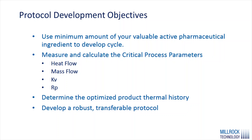A couple of objectives when developing a new freeze drying cycle or optimizing an existing one is that we want to do this using a minimum amount of valuable active pharmaceutical ingredient or protein product. Throughout this cycle, we need to measure and calculate our critical process parameters, such as heat and mass flow, our Kv, vial heat transfer coefficient, and our product cake resistance, Rp.